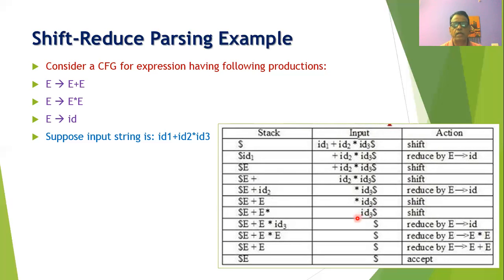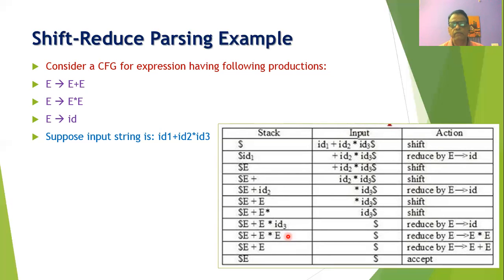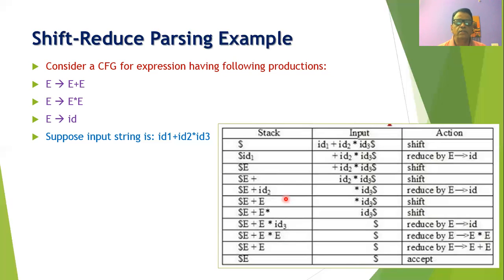A SHIFT action moves the star symbol onto the stack, giving E plus E star. ID3 is then shifted onto the stack, and ID3 is reduced to E giving E plus E star E. Then E star E is reduced to E, giving E plus E. Finally E plus E is reduced to E using the production rule, and all input symbols are exhausted. The stack now contains dollar E and the input has only a dollar sign — this is a successful completion of parsing and the ACCEPT action is performed, confirming the input string belongs to the grammar.